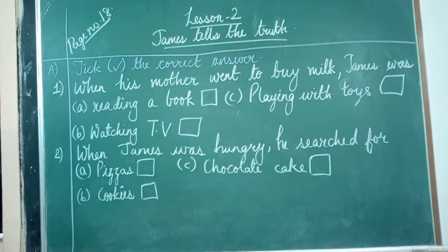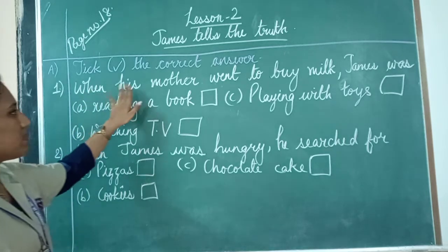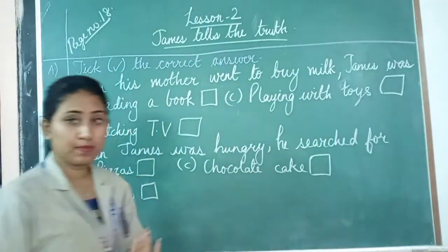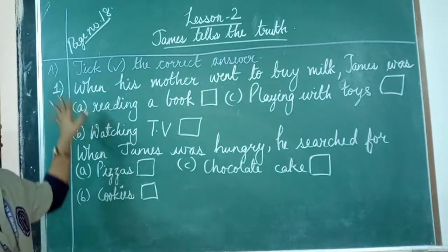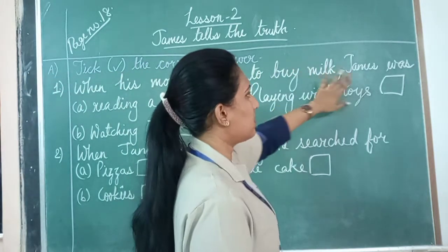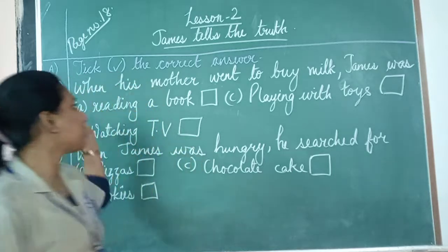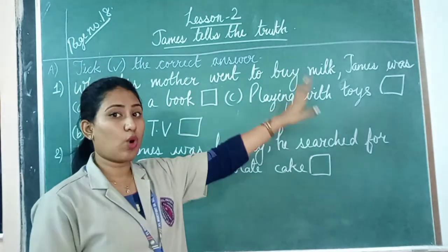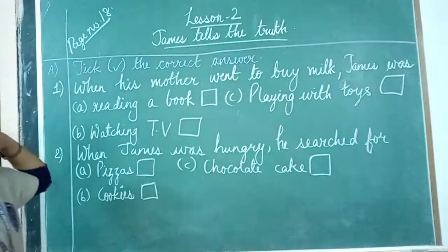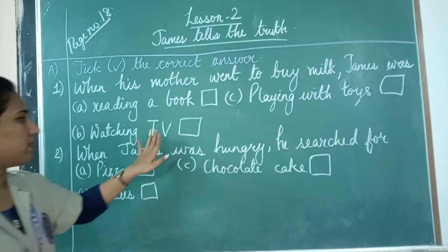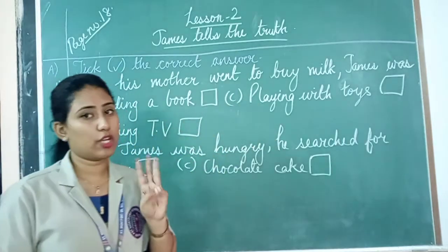I have written two questions here. First we will solve these and then move on to the third one. The first question is: 'When his mother went to buy milk, James was...' Three options are given: reading a book, watching TV, or playing with toys.